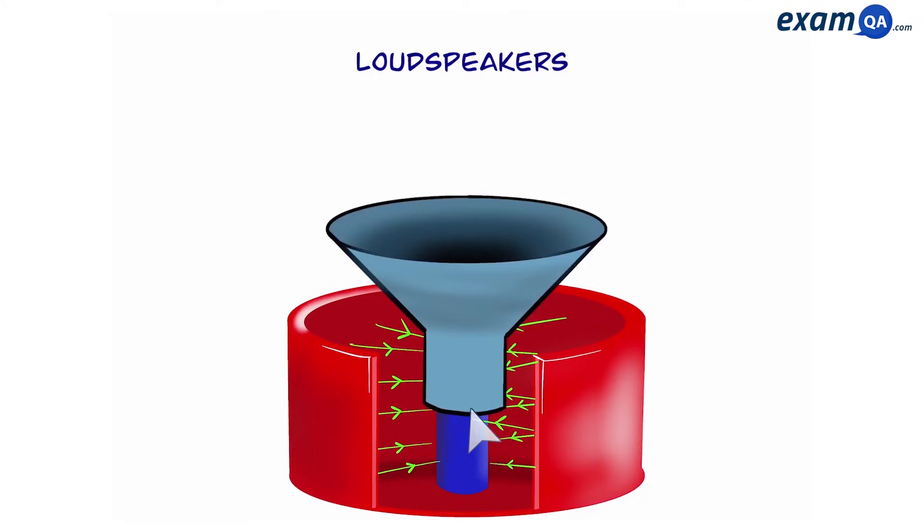Now over the south pole we have a paper cone. Now this paper cone is sitting loosely over the south pole, however it also has metal wires wrapped around its base.